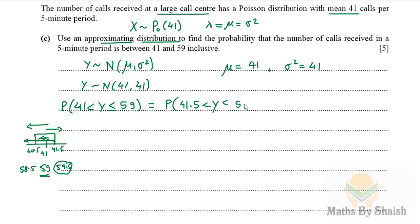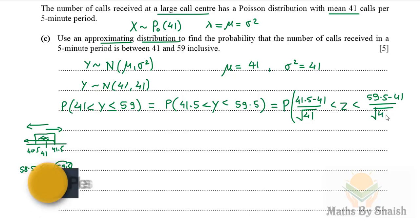Now we will use the standard normal distribution for it, and then it is going to be Z greater than 41.5 minus mean over standard deviation, that is square root of 41, which is less than 59.5. So it is 59.5 minus mean, that is 41, over standard deviation square root 41.